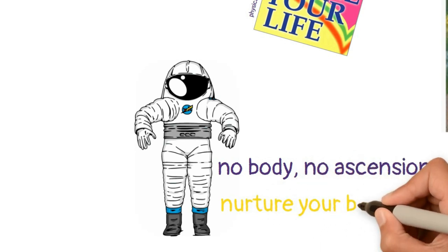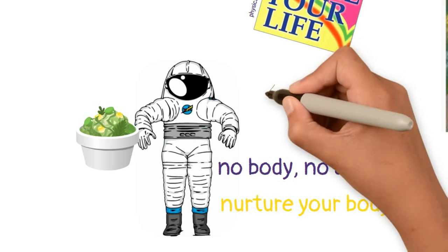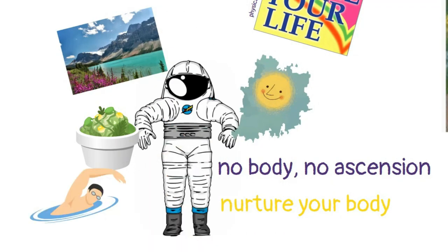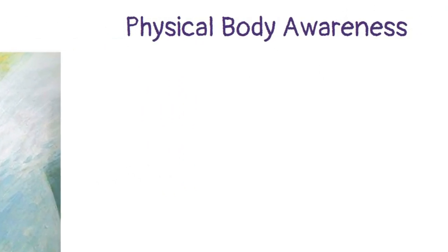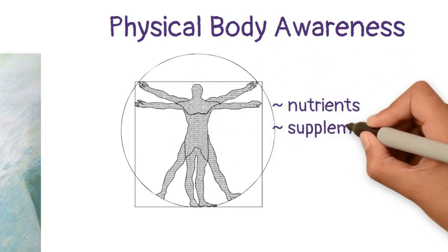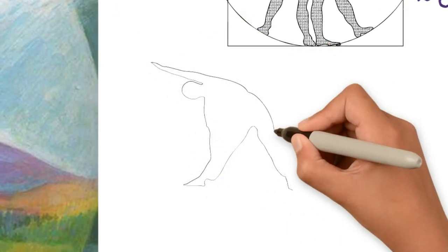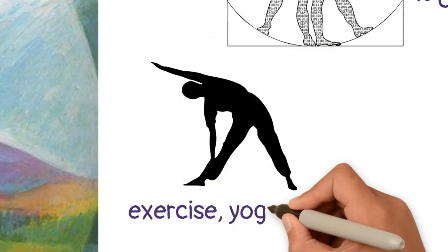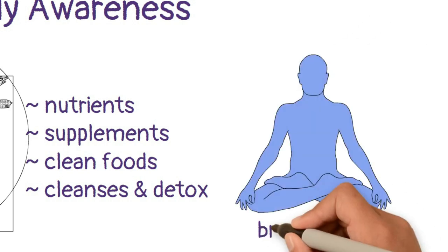So taking care of our physical vehicle becomes paramount, because if you don't feed it properly — give it ample nutrition, sunshine, fresh air, recreation — it will develop problems. Practical ways to increase physical body awareness: number one, commit to things that support your physical body, such as nutrients, supplements, foods, cleanses, and detox. Physically supporting your body through exercise — yoga, tai chi, running, or any movement — can be very supportive. Breath work can be very beneficial, as is spending time in nature and making sure you get enough sunlight.